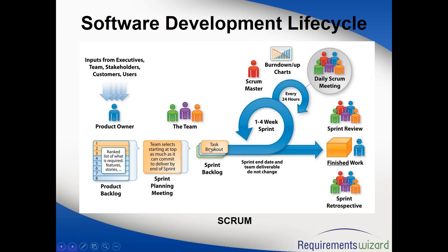Once the team commits work to the sprint backlog, the scope of that sprint cannot be changed — what you committed must be delivered. If you estimate poorly, you'll either overcommit and be unable to deliver, or undercommit and leave capacity unused. You should optimize your sprint team's capacity to deliver exactly what you can handle — neither too much nor too little.